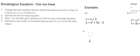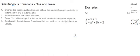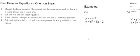The steps are: one, change the linear equation — the one without the squares — so that x is in terms of y, or y is in terms of x. Two, substitute this into the non-linear equation. Three, solve — you will often get two solutions as it will turn into a quadratic equation. Four, substitute back in the solutions you found for x or y to find the other values.